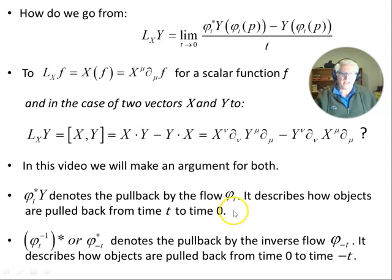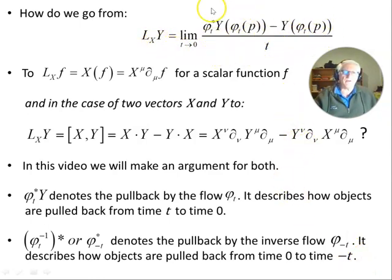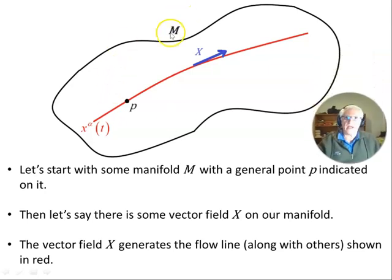Before we start: φ_t* of Y denotes a pullback by the flow φ_t — it describes how objects are pulled back from time t to time zero. Whereas φ_{-t}* of Y denotes the pullback by the inverse flow φ_{-t}, describing how objects are pulled back with the inverse flow from time zero to time minus t. You could also represent this as φ_{-t}* with a negative one, indicating the inverse. So there's a difference between those two.